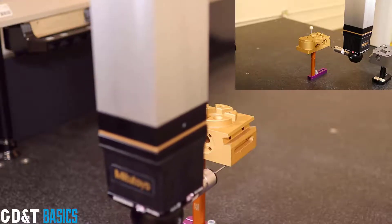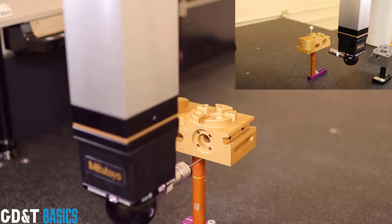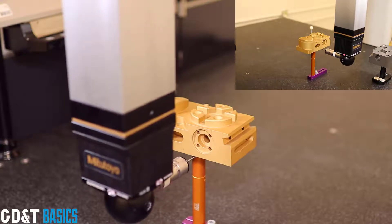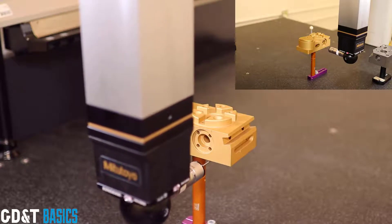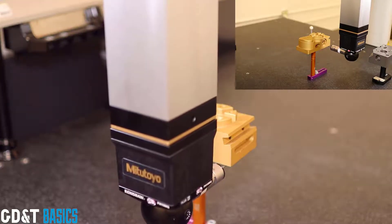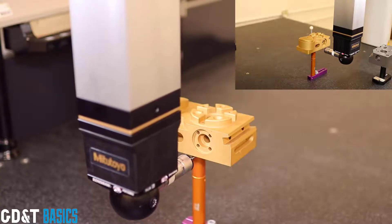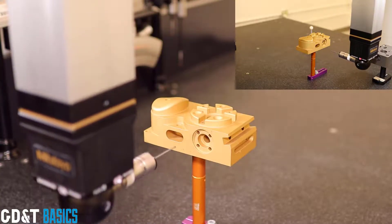He's now collecting points from the right side of the part. Once this is complete, the software will take the three highest points and it will create a datum plane, which is a perfect plane. Note that he utilized a thread on the bottom of the part to mount this on top of a post. This gave him the ability to get under the part in order to be able to do the probing.